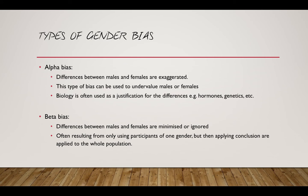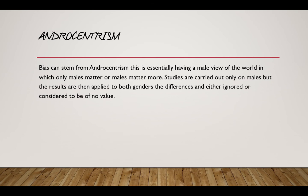Beta bias differences are ignored or minimized when perhaps they shouldn't be. Androcentrism is a specific form of gender bias that stems from potentially having a male worldview, in which only males matter or males matter more. Studies tend to be carried out only on males, and therefore the results are generalized to females as a sort of afterthought.